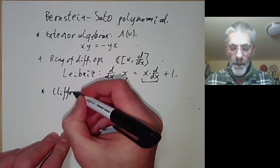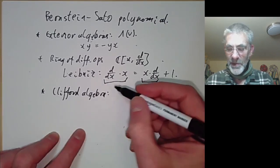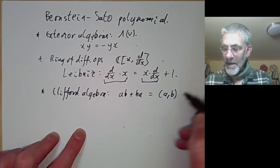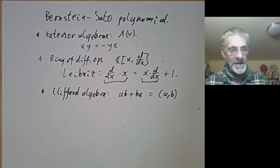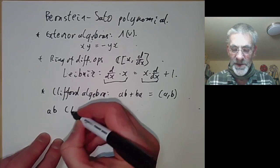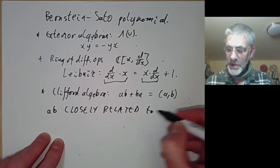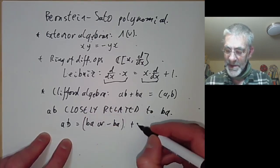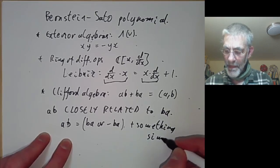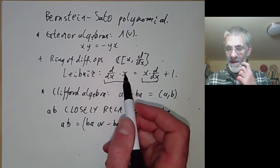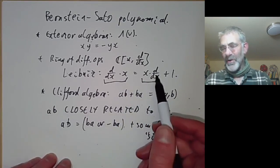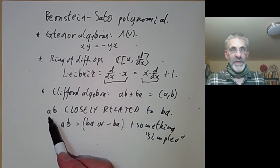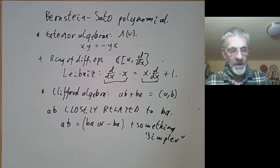You can also have Clifford algebras, where you have a quadratic form and a·b + b·a is given by the inner product of a and b, if you've got some inner product on a vector space. All of these have the property that a·b is closely related to b·a — roughly speaking, a·b equals b·a or minus b·a plus something simpler. Here d/dx and x commute up to a constant, and a constant is simpler than x or d/dx. If you've got any algebra close to commutative in this sense, you can quite often apply the techniques of commutative algebra to it.